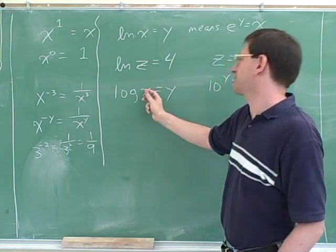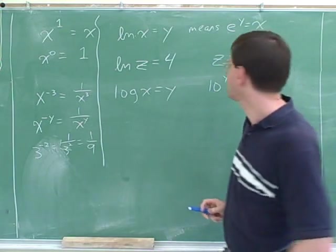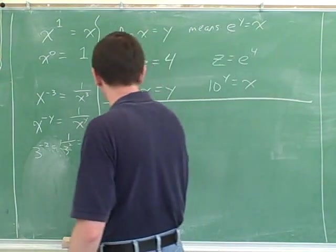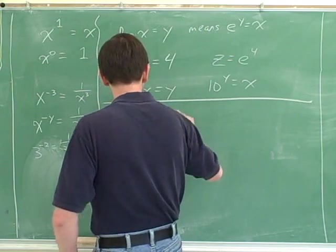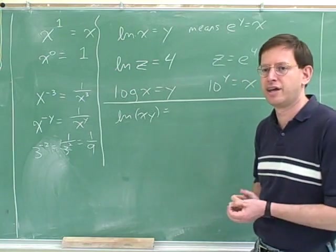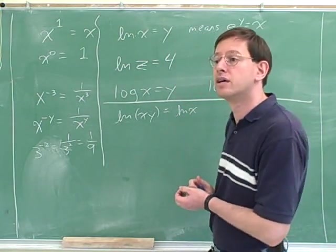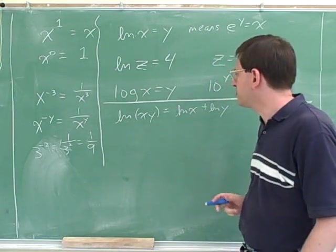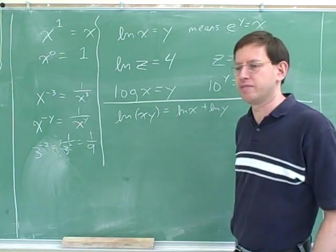So again, if I had to solve this for x, well, if I wanted to solve this for x, I wouldn't use e. I would use 10. Does anyone know another way to rewrite this? ln x plus ln y. Right. Okay, it's not too hard to prove this, but we won't bother with any proofs. We'll just write down the facts that you need to know about logarithms.